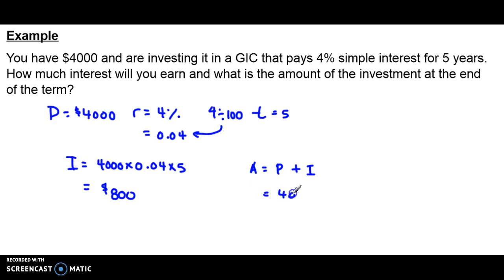Again, the principal was $4,000, and we just calculated that the amount of interest earned was $800. So the total amount of the investment at the end of the term will be $4,800.